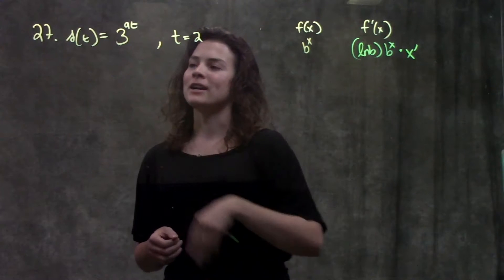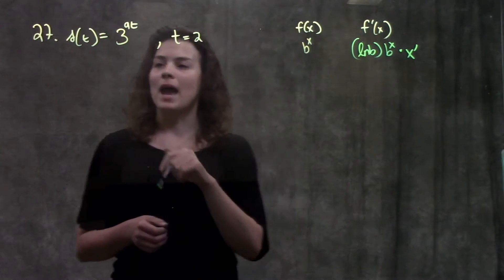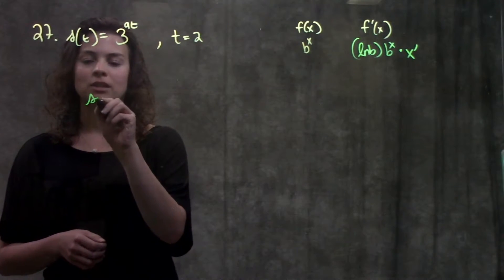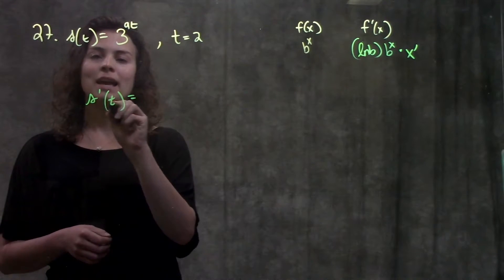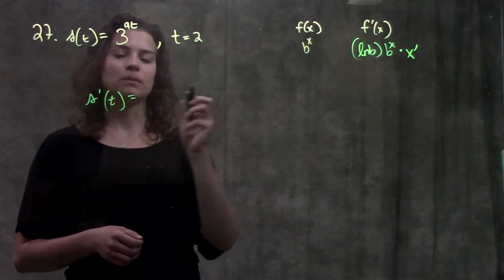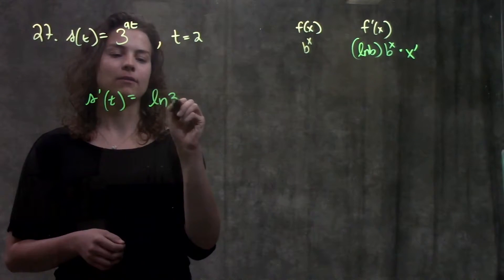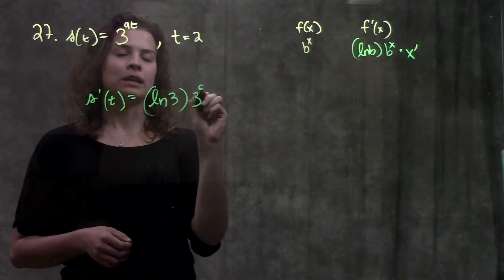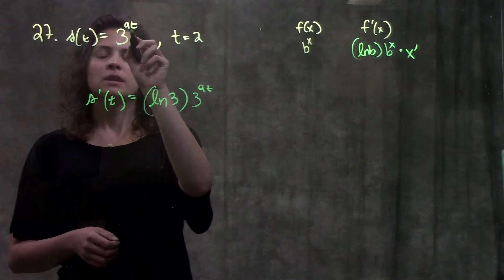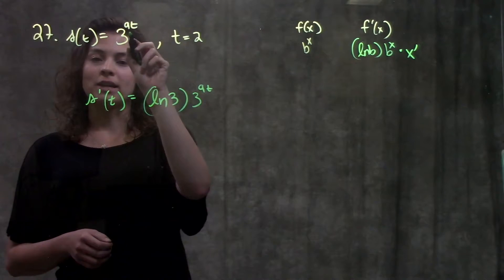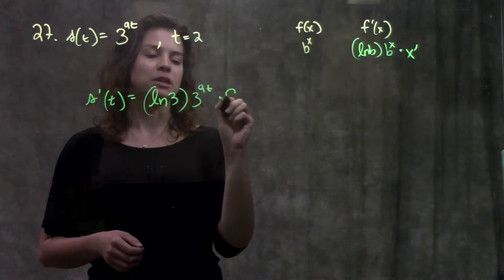Going back to number 27 in your book, I'm going to find the derivative of this function. I get s'(t) equals, using my rule, ln of 3 times 3 to the 9t times the derivative of whatever this exponent is, which ends up just being 9.